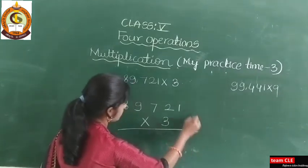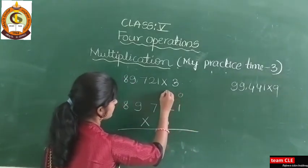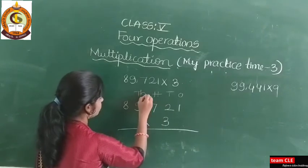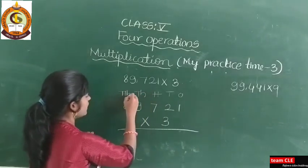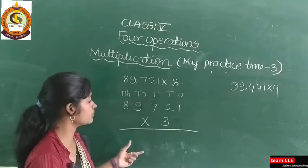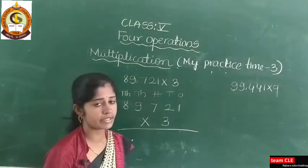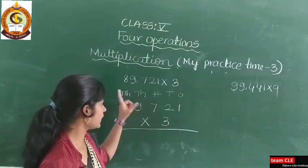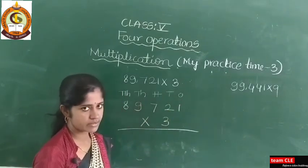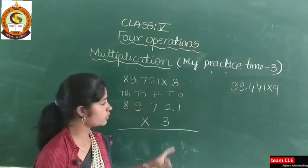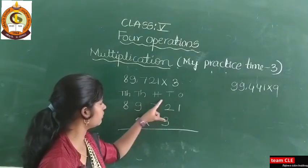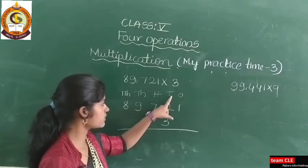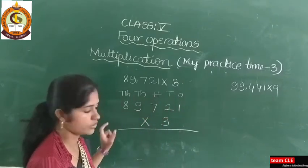Next, multiply from right. The place values are 1s, 10s, 100s, 1000s, 10,000. Dear students, most students get confused whether to start with the 1s place or the 10,000s place. To clear that doubt, it is very important to write the place values. Therefore I wrote here 1s, 10s, 100s, 1000s, 10,000.